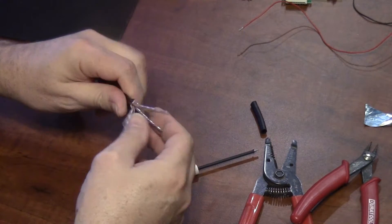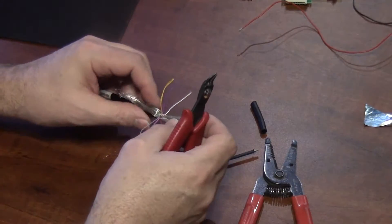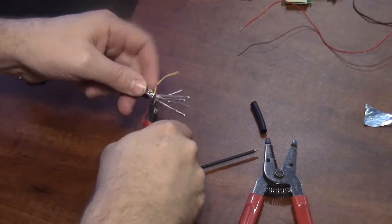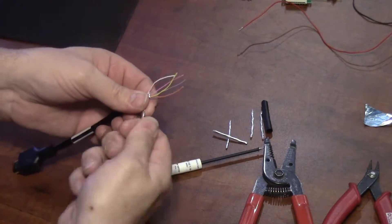In this graphic I kind of show the pins real quick and the colors that were in this particular cable. Yours might be different. I'm going to cut off the video wires because I don't need them and I'm going to twist the shield together.